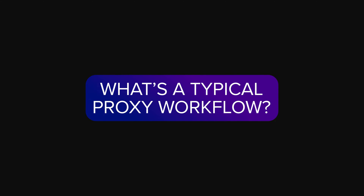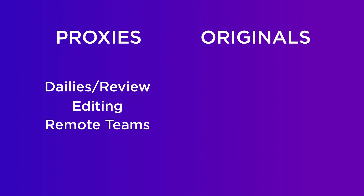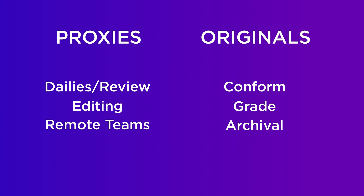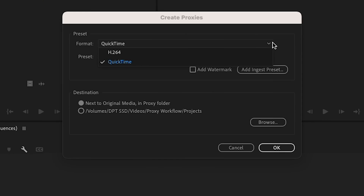Ever wondered how those Hollywood editors manage big movie projects? You're about to learn one of their secret techniques. In film editing, traditional proxy workflows mean editing with the proxies and saving the camera originals for the big tasks like conforming and grading. This is the standard for film and TV, especially when there are turnovers involved, and these proxies are usually made outside of Premiere Pro. On the flip side, Premiere Pro's own proxy workflow is perfect for shorter, turnover-free projects. It's usually smooth sailing, but watch out for some common pitfalls.